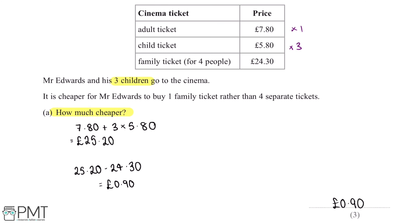Now this question is worth three marks. We'll get our first mark for beginning our method to work out the prices of the four separate tickets. We'll get our second mark for the full method to work out the difference between the two prices. And our third mark for the correct answer with the correct units.